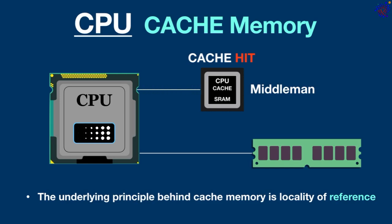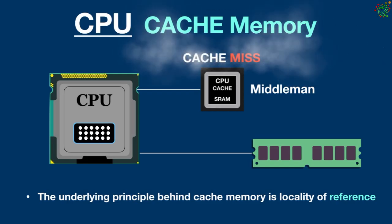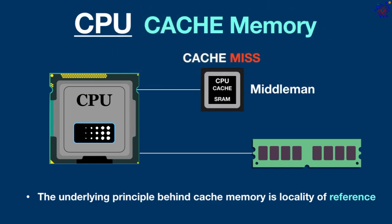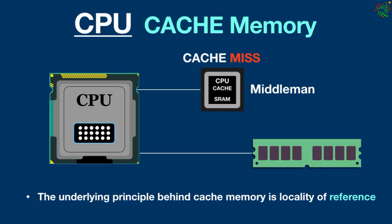On the other hand, if the required data is not found in the cache, it results in a cache miss. In such cases, the CPU must take the longer and slower route to access the main memory RAM to obtain data. Subsequently, the retrieved data is stored in the cache to facilitate potential future access.